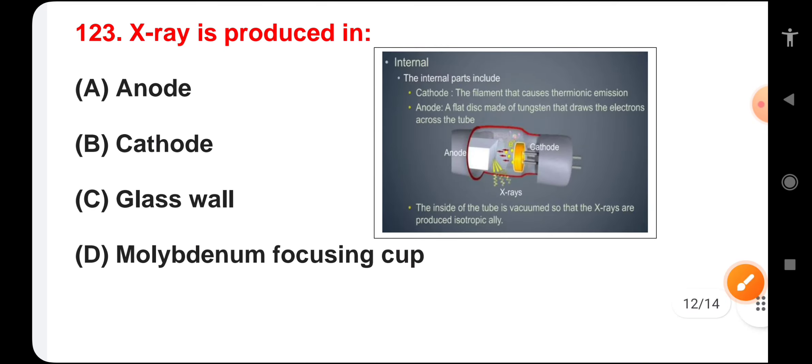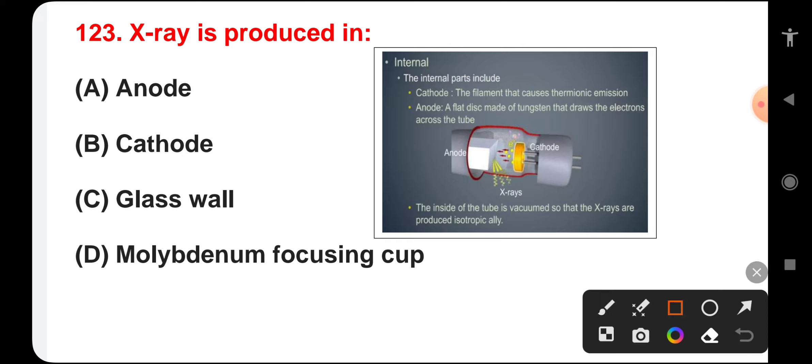X-ray is produced in anode, cathode, glass bulb, or molybdenum focusing cup. The correct answer is anode. The cathode is the filament that causes thermionic emission. The anode is a flat disc made of tungsten that draws the electrons across the tube. X-ray is produced in the anode.